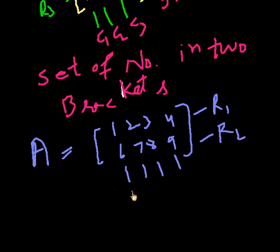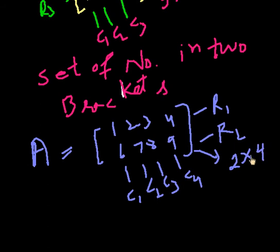C1, C2, C3, C4. So this matrix is order of 2 into 4. Now we should know which is the square matrix.